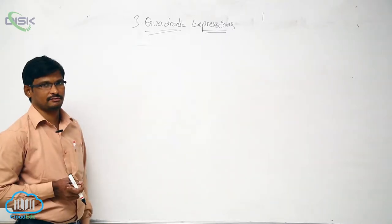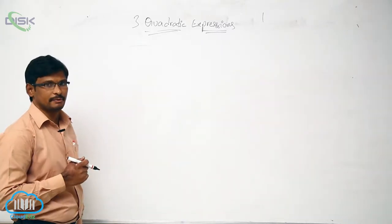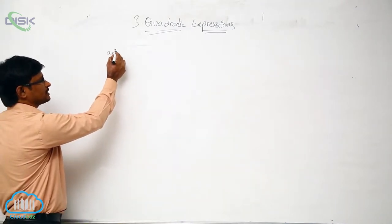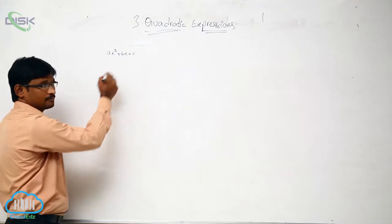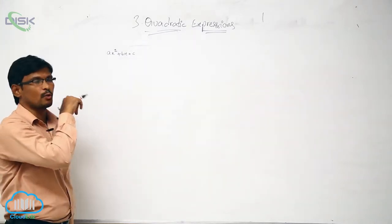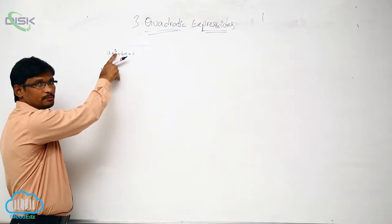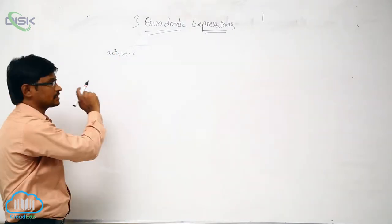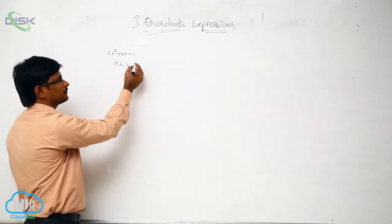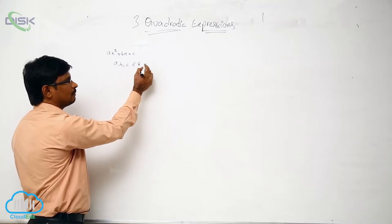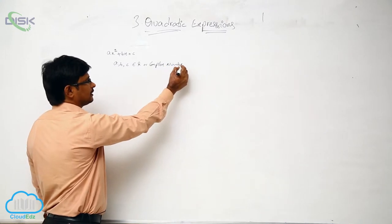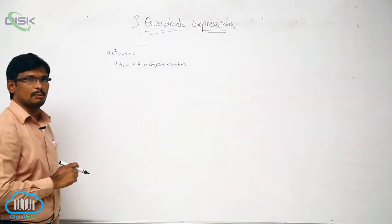A quadratic expression is a polynomial in the form Ax squared plus Bx plus C. The degree here is 2. In this expression, A, B, and C may be real numbers or complex numbers.